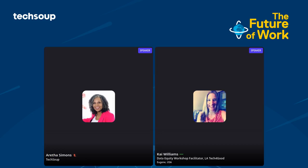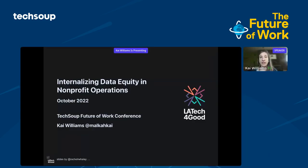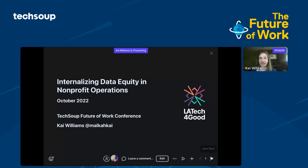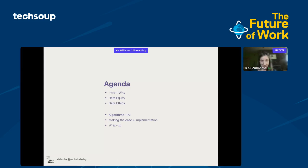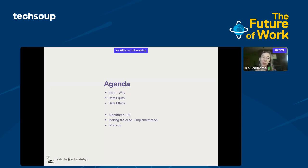Thank you so much. I'm Kai Williams, executive director of the International Wildlife Rehabilitation Council, and also a workshop facilitator for LA Tech for Good. I'll mostly be talking about the work I do with LA Tech for Good, bringing in a few examples from IWRC. Today's session is really a plea — a plea to use documentation to internalize equity within your nonprofit operations.